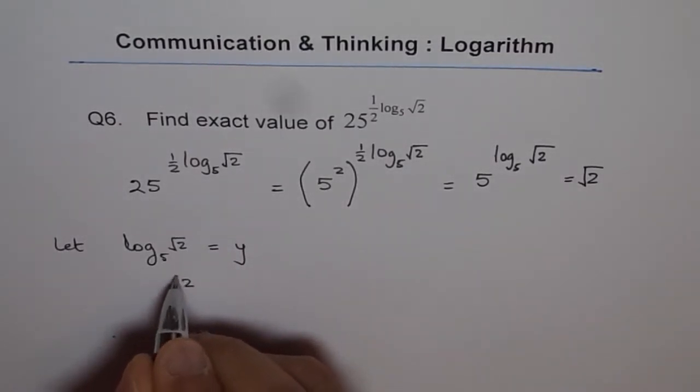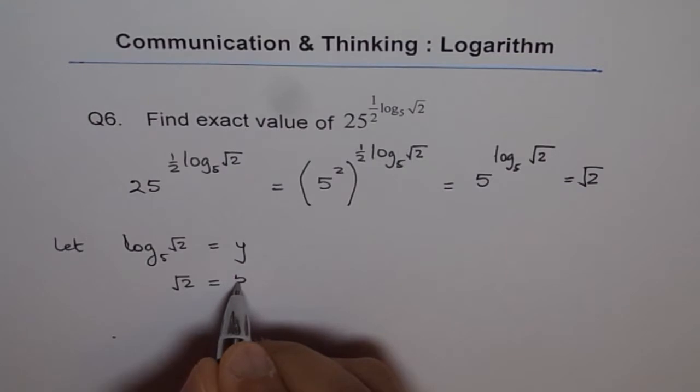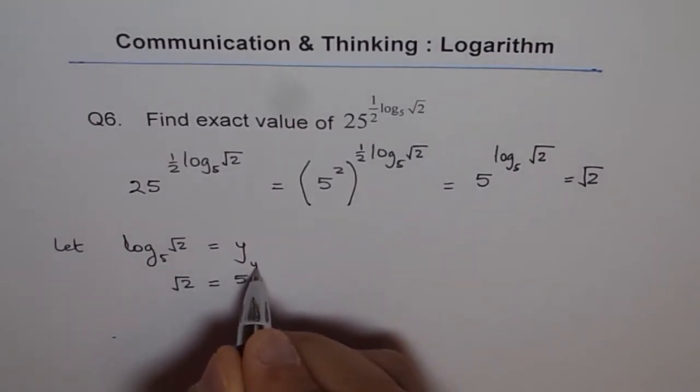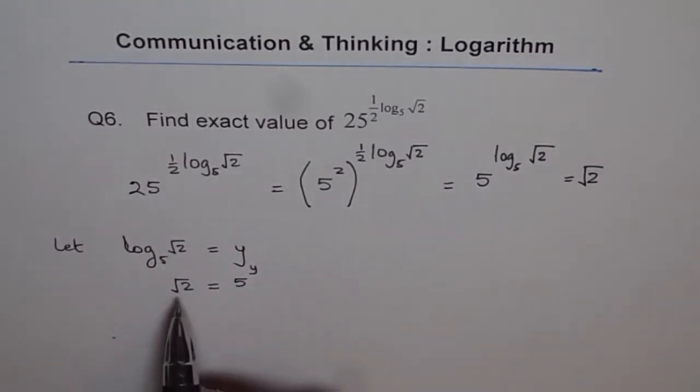In that case, square root 2 will be equals to 5 to the power of y. So we are just changing the form to the exponent form. And now let us see what we have here.